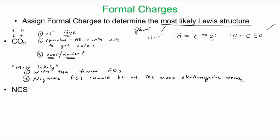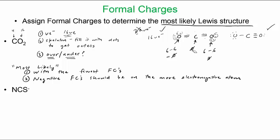Let's calculate formal charges: it's valence electrons minus dots minus dashes. For the symmetric double-bond CO2 structure, each oxygen has six minus two lone pair electrons minus four bonding electrons equals zero. Carbon has four minus four equals zero. You'll notice oxygen following the octet rule here has a zero formal charge — that's essentially where the octet rule comes from.